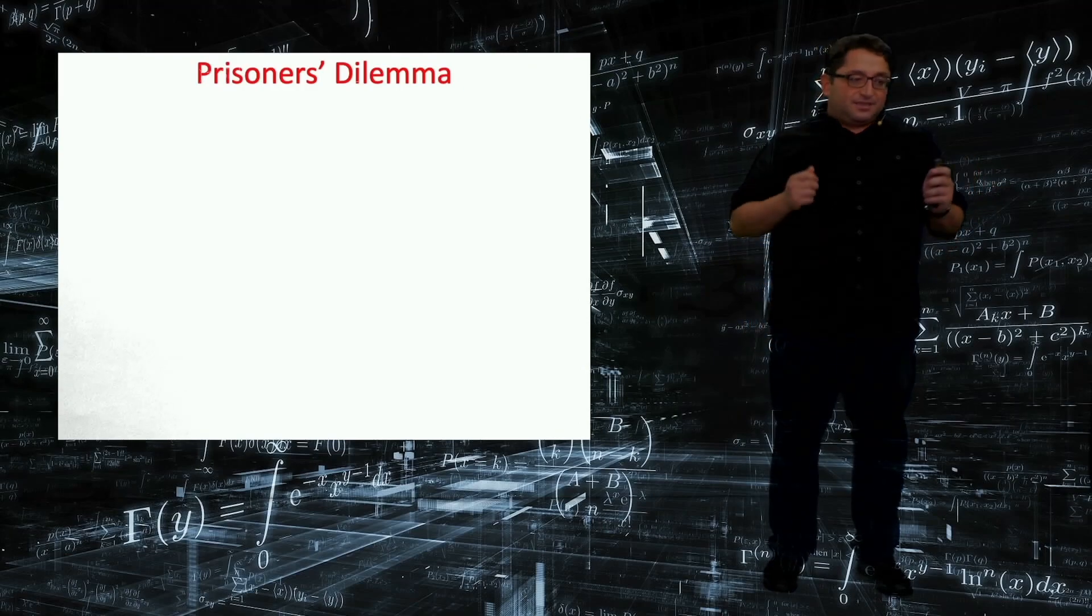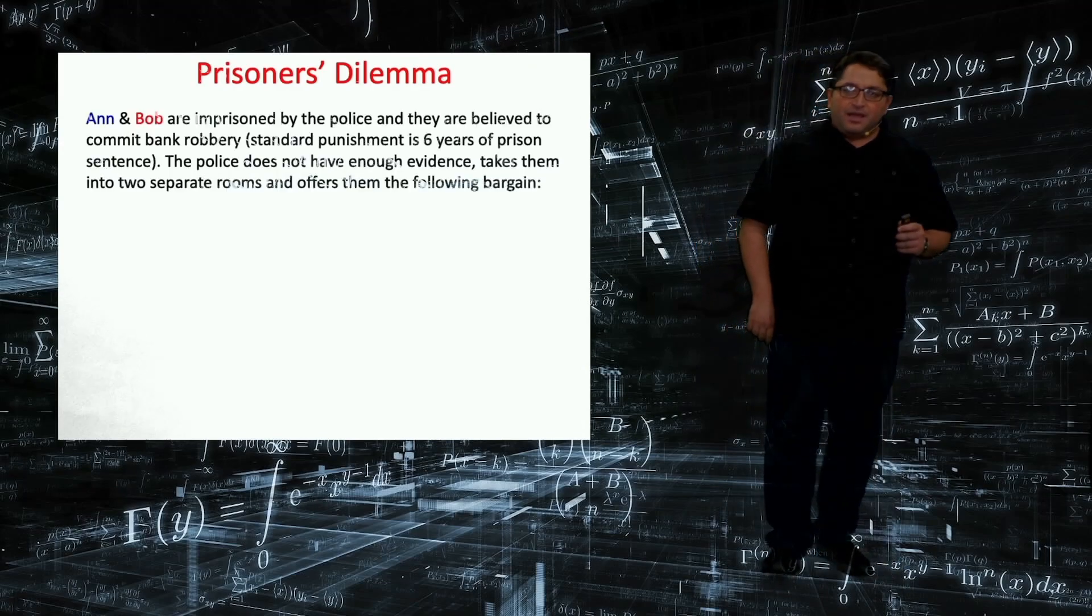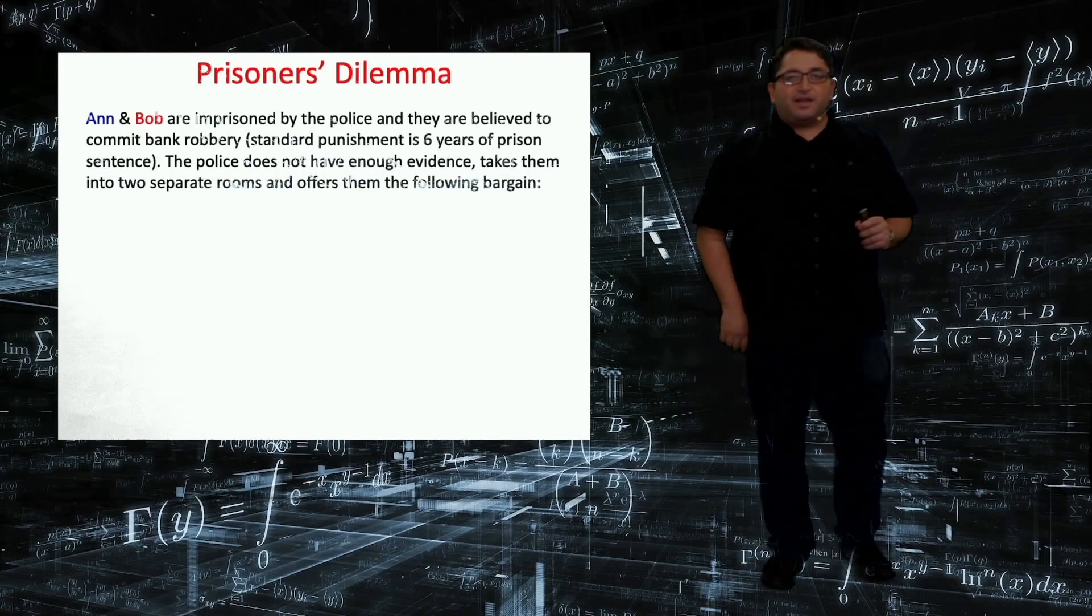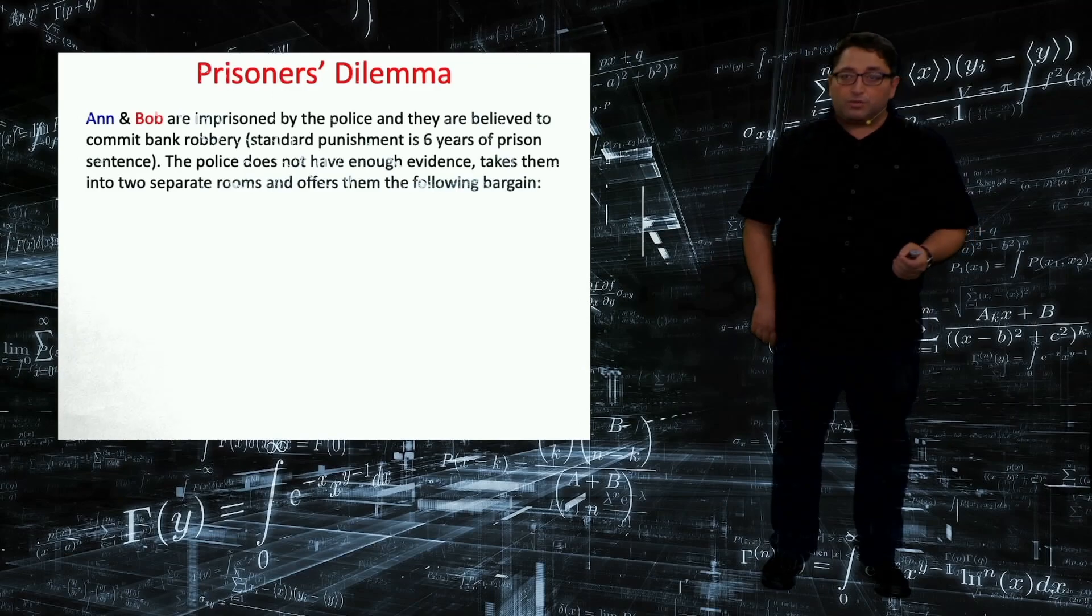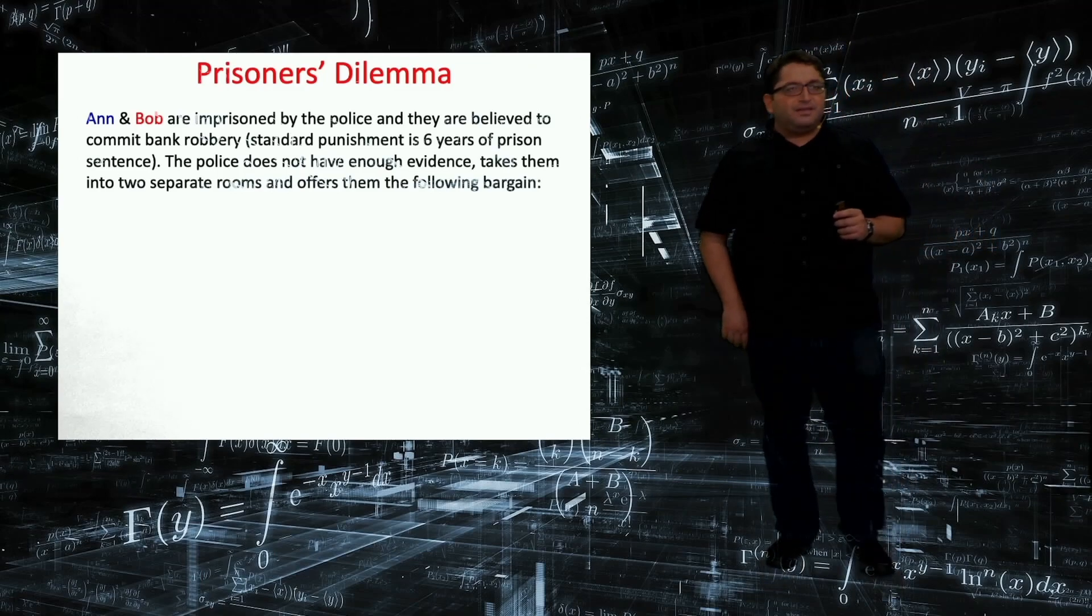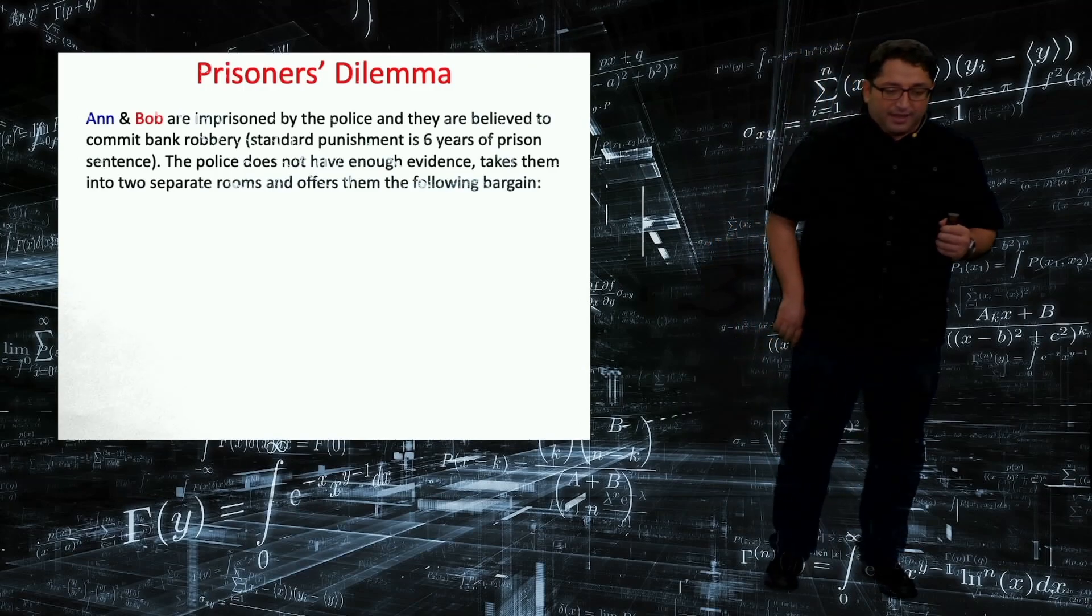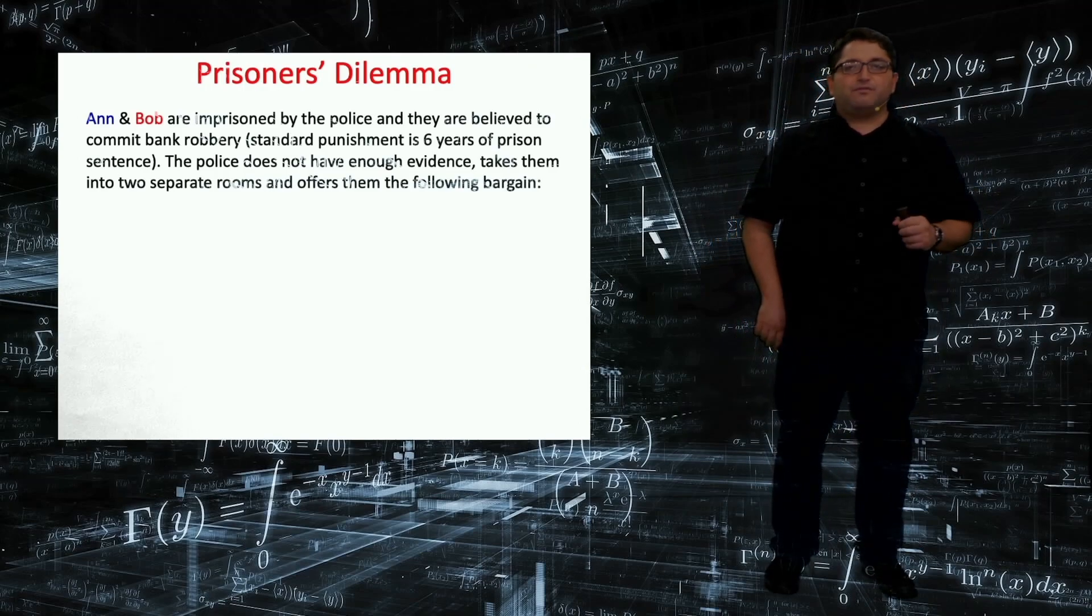Prisoner's Dilemma is probably the most famous example of game theory. Here, two suspects are caught by the police and they are thought to be bank robbers. Unfortunately, the police does not have any strong evidence. That's why he is looking for some sort of a plea deal.